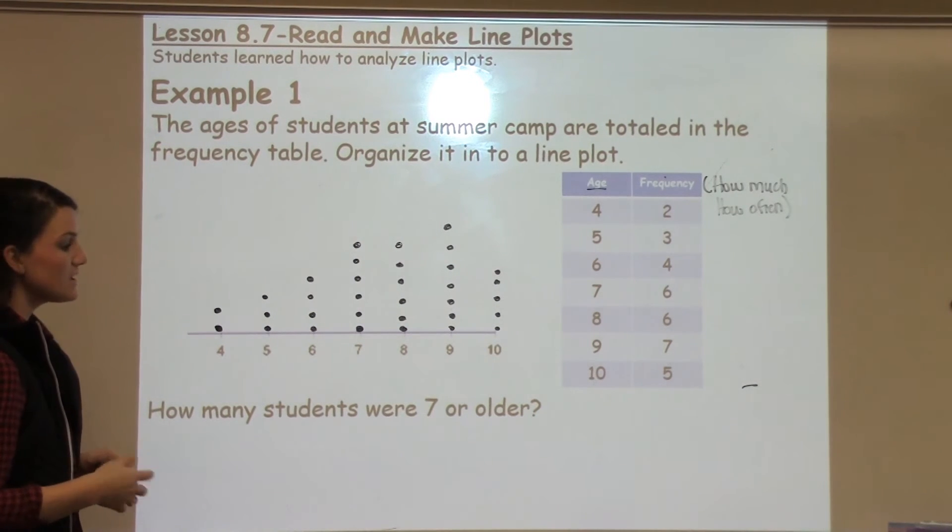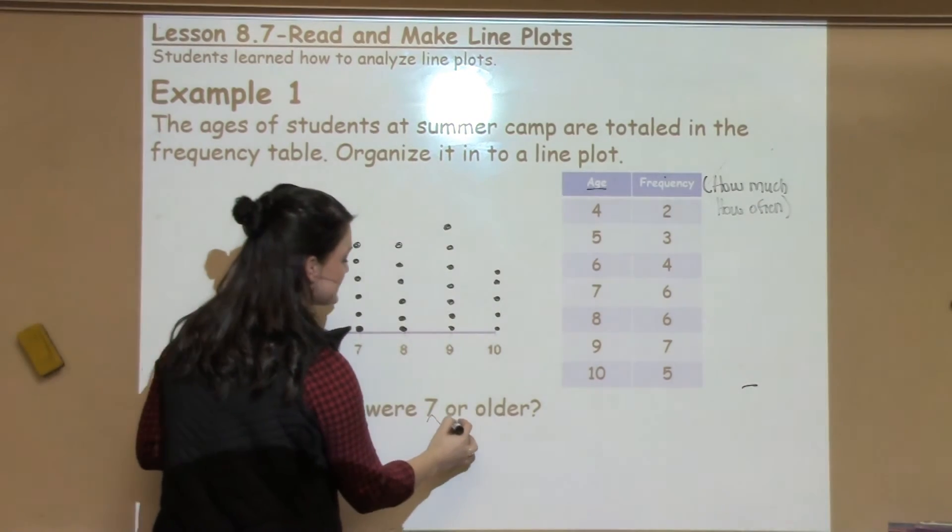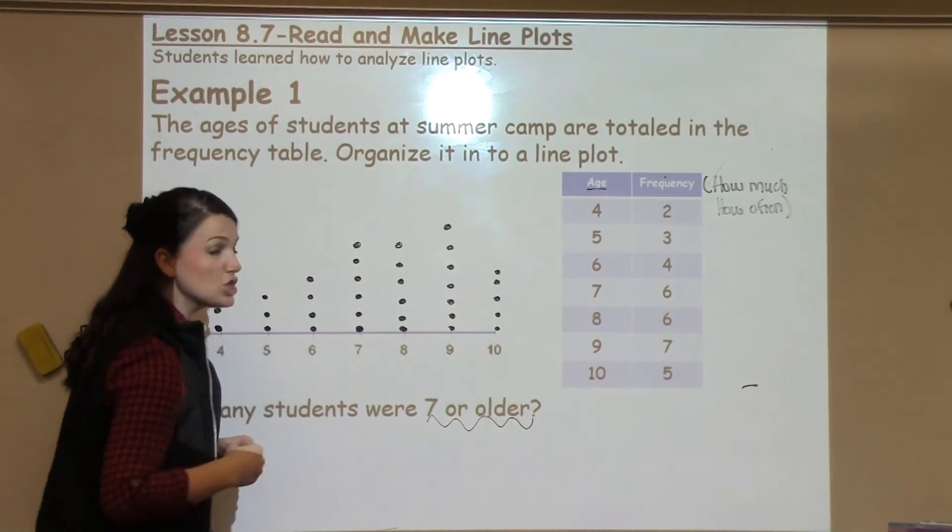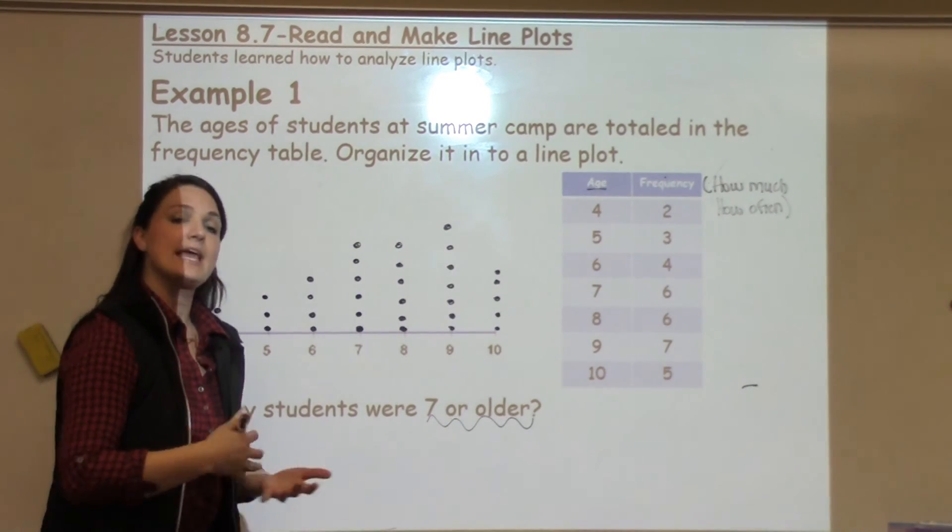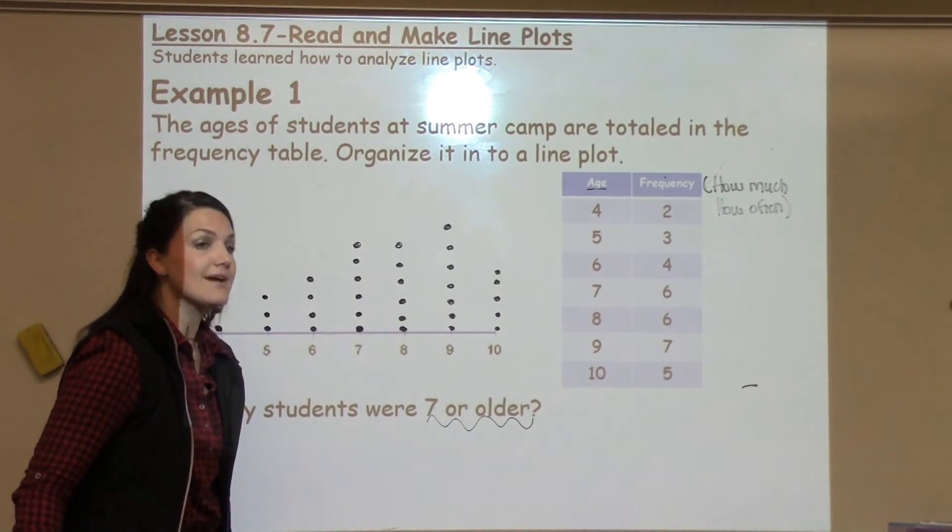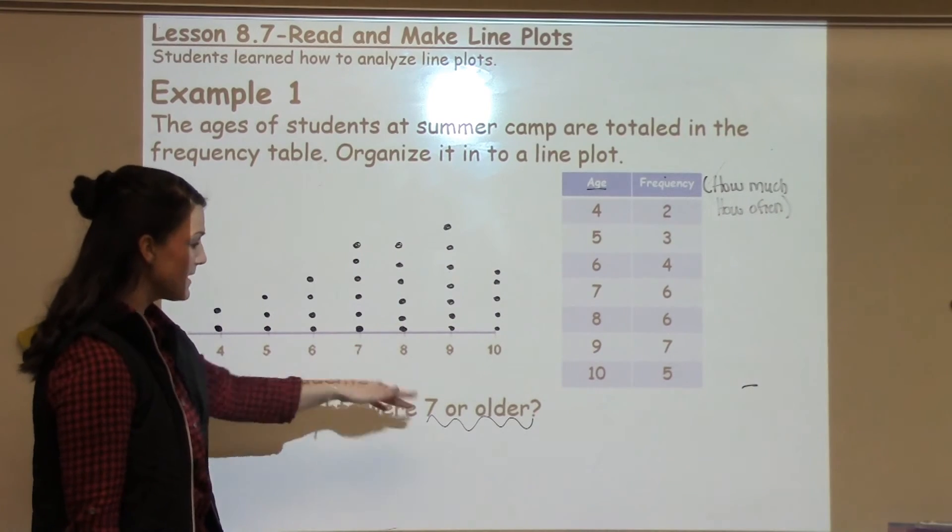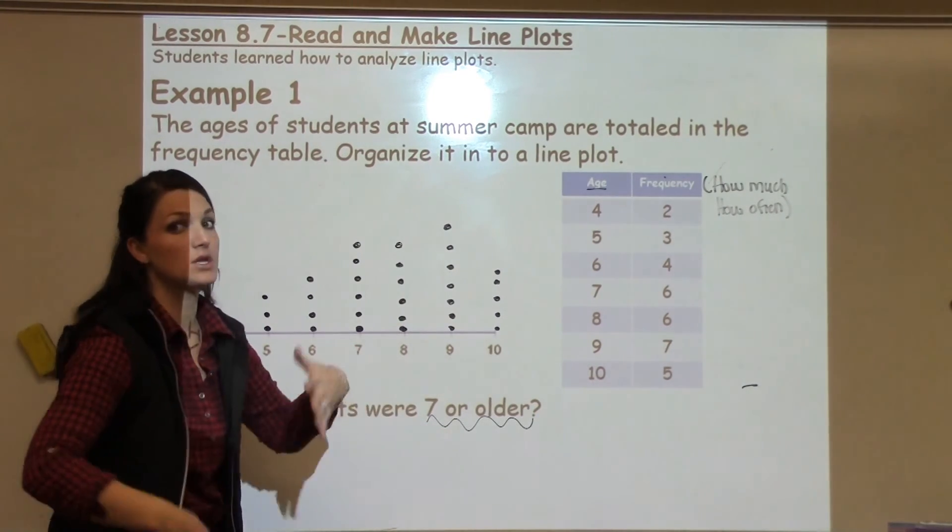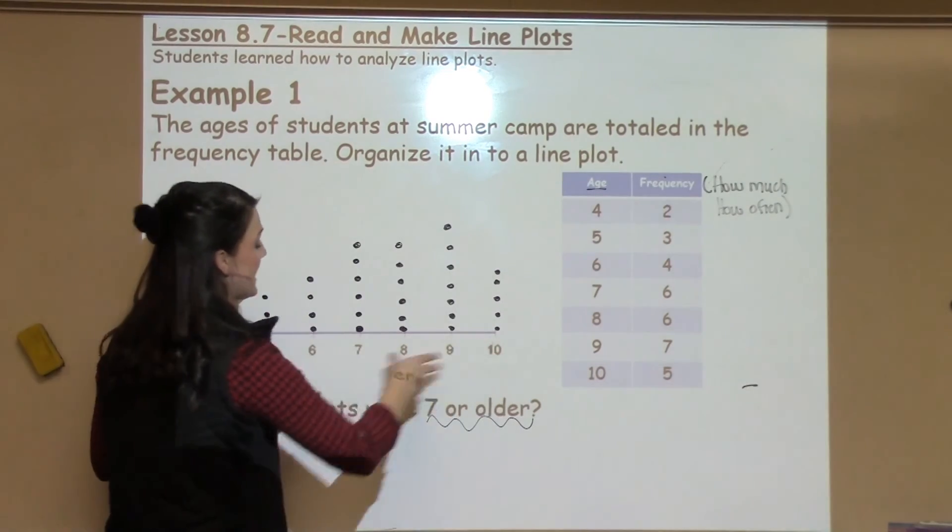It says, how many students were seven or older? Now we work with students a lot on really looking at this language and thinking should I include seven or should I not? Because some of our questions might say how many students are older than seven? How many students are younger than seven? In which case we wouldn't include the people that are seven, but in this case it says seven or older which means I can include the seven as well as anything more.